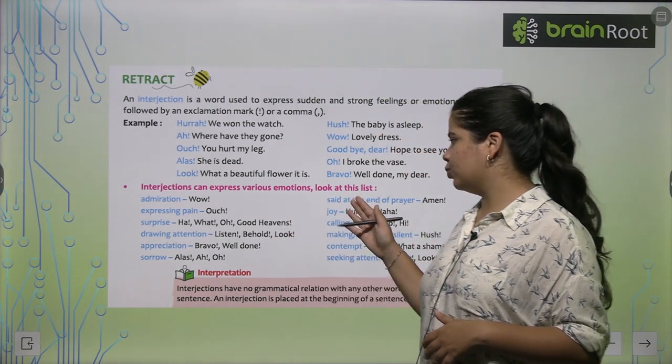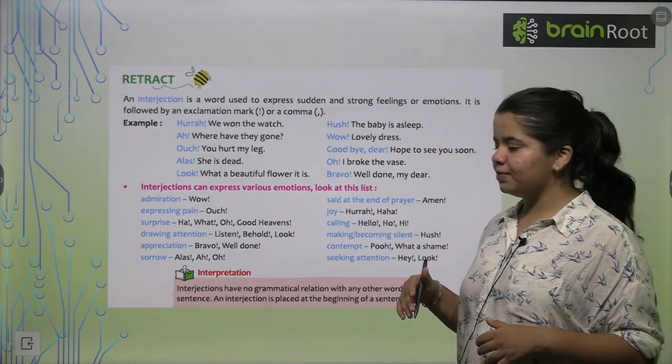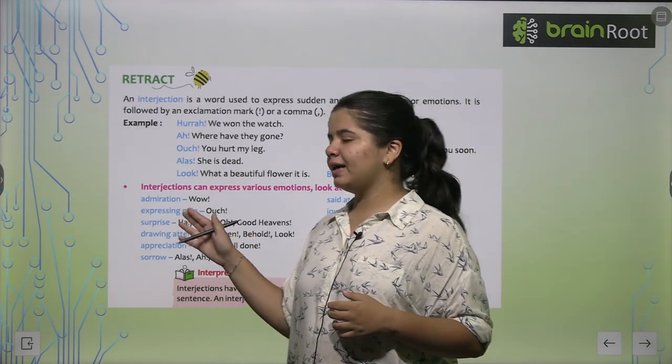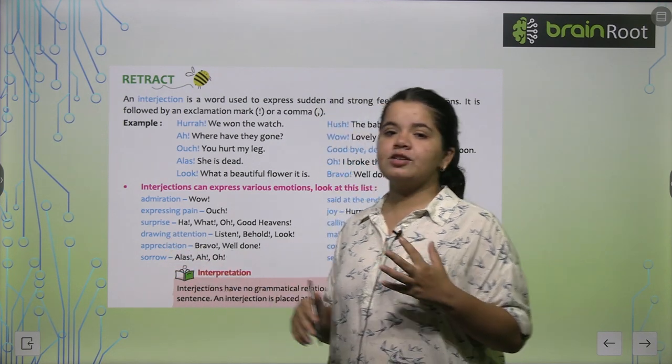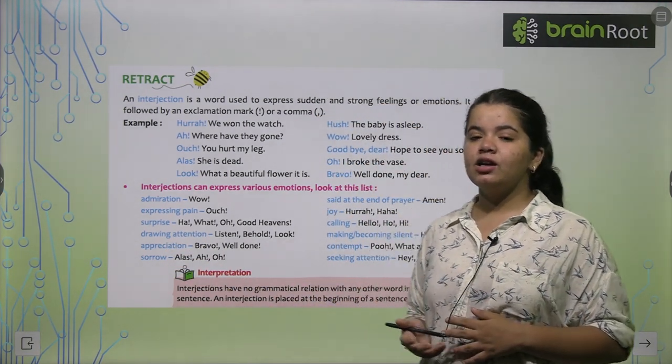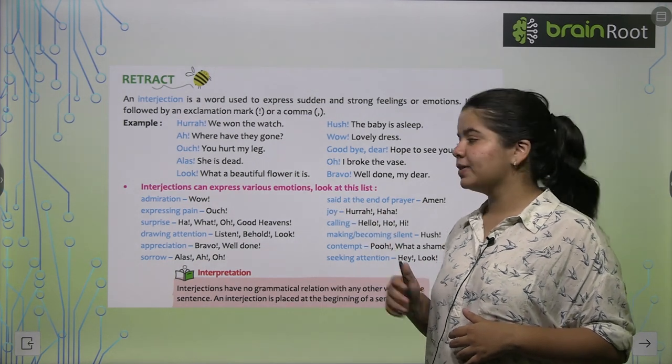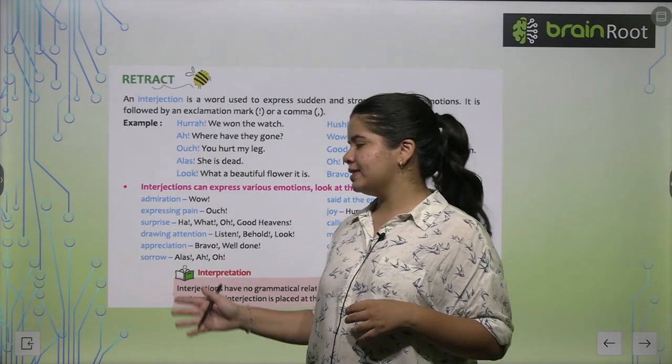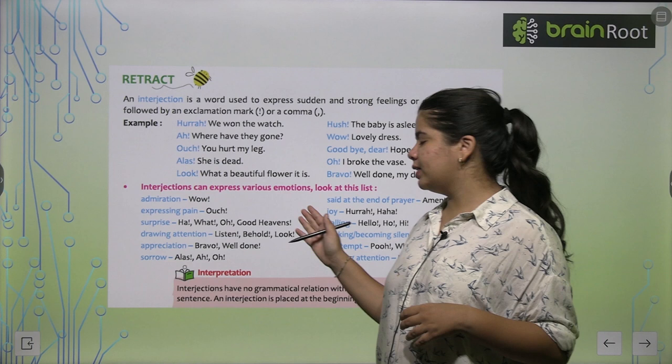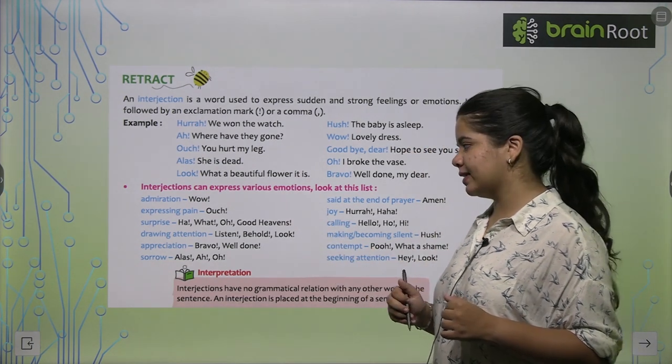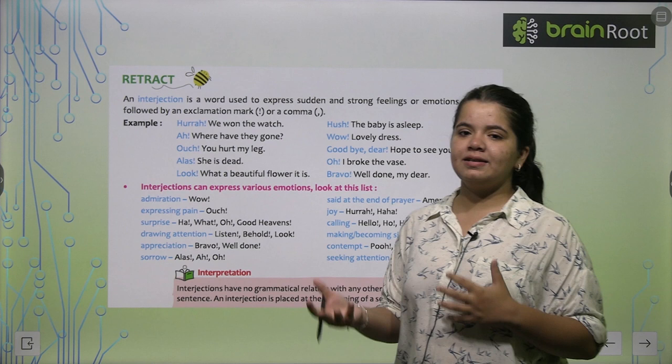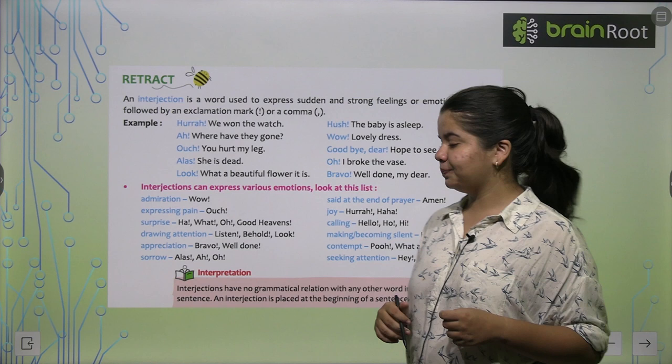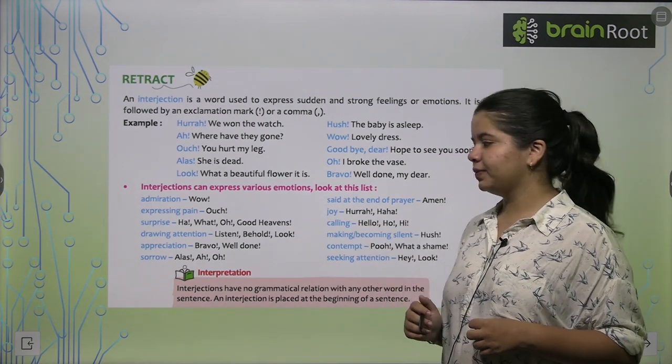Now interjections can express various emotions. We'll look at this list now about which interjections you can use with which feelings. First is admiration - when you admire something or someone looks very good to you, you can use words like Wow, right? If you want to express your pain, then Ouch. For surprise: Ha, What, Oh, Good heavens - you can use all these words. Next, drawing attention - if you want to draw someone's attention towards you, you can write: Listen, Behold, Look.